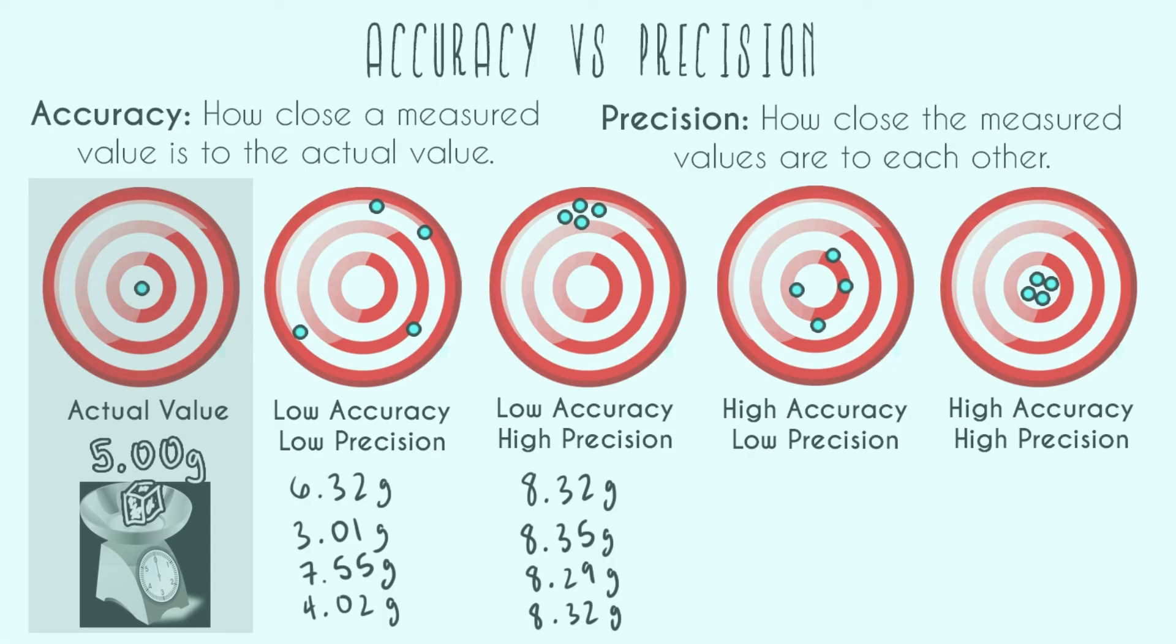And now let's do a high accuracy, but low precision measuring four times. So we're going to be getting close to the actual value, but it's not going to be super precise. The values are going to be a little bit all over the place. So maybe that looks like something like this. So we had 5.15 grams, 4.77 grams, 5.28 grams, and 5.00 grams.